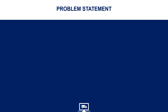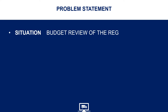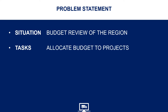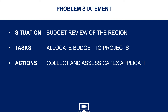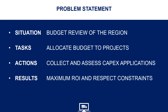What is the problem statement? We can call it the budget allocation problem. You have to prepare the budget review for your region — allocate the budget to projects, collect budget applications, and assess the projects. Your result will be the return on investment while reflecting the constraints from your management.